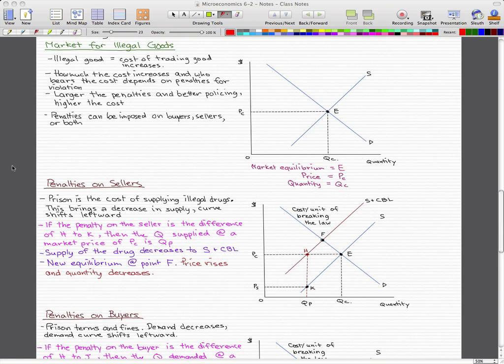Now we're going to take a look at the penalties on sellers and buyers, because that's what we really should look at when we're talking about market for illegal goods. Pretty obvious that the prison is the cost of supplying illegal drugs. This brings a decrease in supply, and the curve shifts leftward.